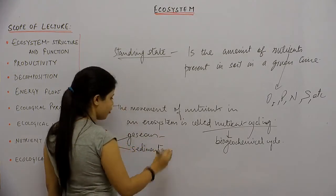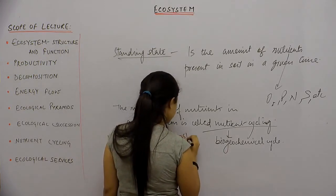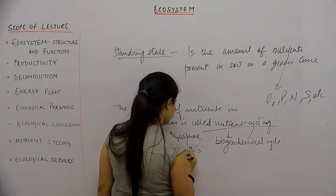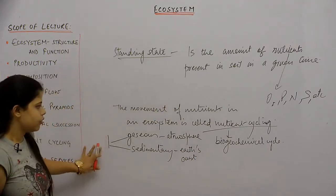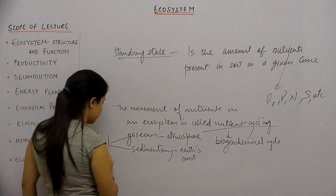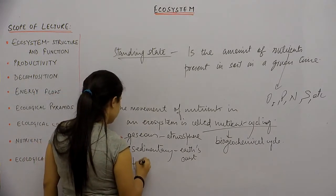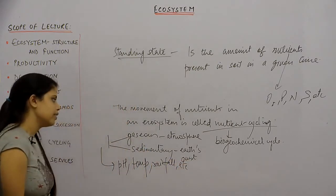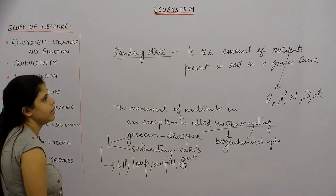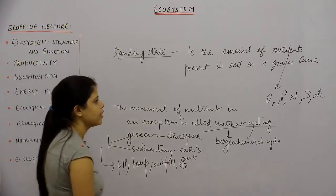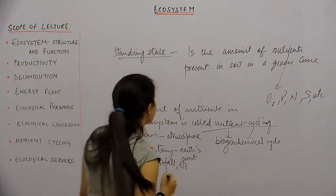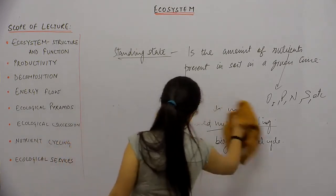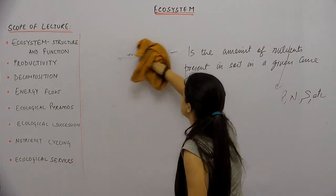The reservoir for the gaseous nutrient cycle is present in the atmosphere, and the reservoir for the sedimentary nutrient cycle is present in the earth's crust. For both nutrient cycles, the reservoirs are dependent on climatic conditions like pH, temperature, and rainfall. The basic function of the reservoir is to maintain balance in the cycles where there is a disturbance in flux and influx.